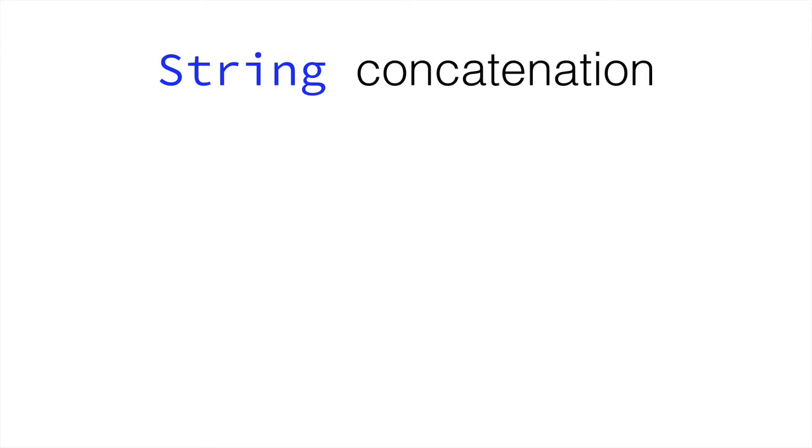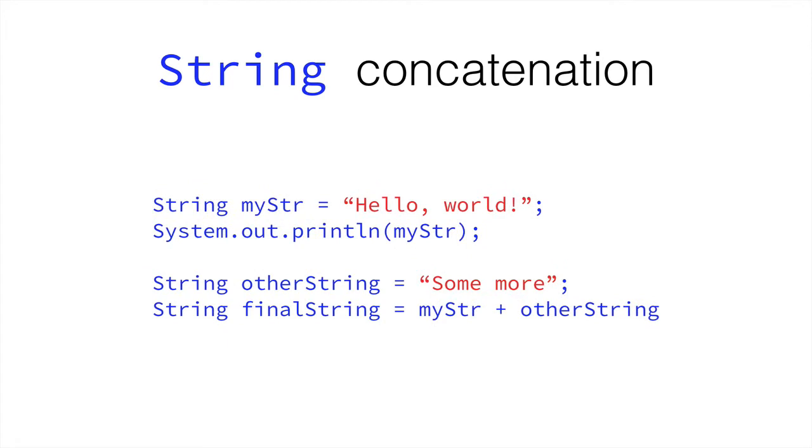Let's see how we do string concatenation. We've seen this already, so this should be fairly simple. If we have a string called mystring, or mystr, that equals hello world, and then we can print that out, and then string other string is some more. The final string would be hello world some more. This is fairly simple, and we've done how to concatenate strings together with plus sign in an earlier lecture.